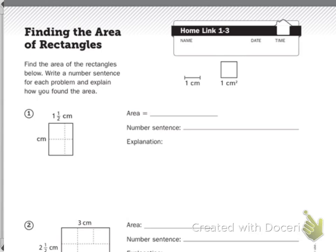We know that this is one whole centimeter and a half. So our number sentence would be one and a half centimeters, and we can either add or I might multiply. I see one and a half centimeters times two centimeters.